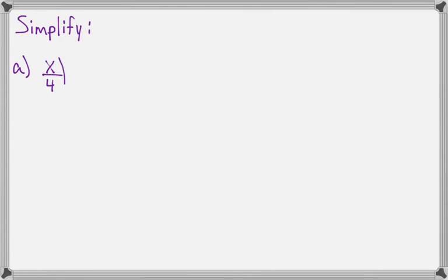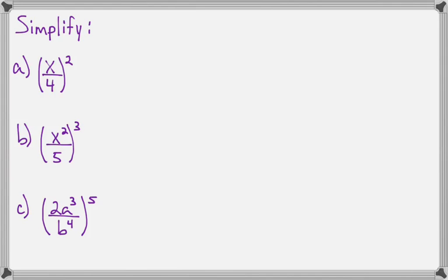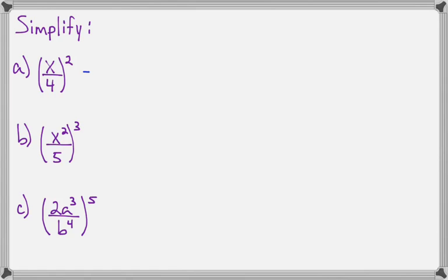Let's look at some examples together. Here I have x over 4 raised to the second power, so I'll have to apply the second power to the top and the second power to the denominator. So x to the second is x squared and 4 to the second is 16.